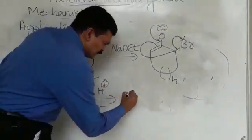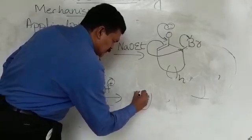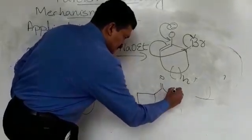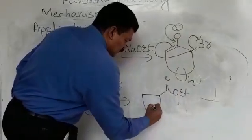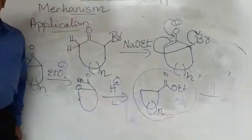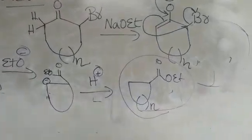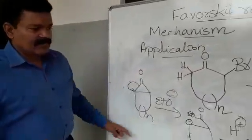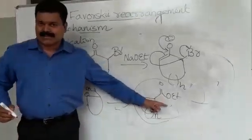And the product that we get is - so this works for cyclic molecules having any number of carbon atoms. So with ease, without any difficulty, by Favorski rearrangement, we can easily prepare cyclic esters.